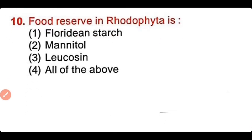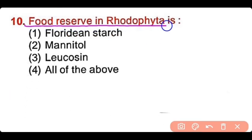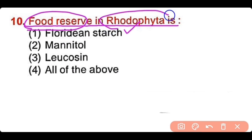Question number 10: Food reserve in rhodophyta is floridean starch, mannitol, leucosin, or all of the above? The correct answer is option 1. Floridean starch is the food reserve in red algae or rhodophyta.